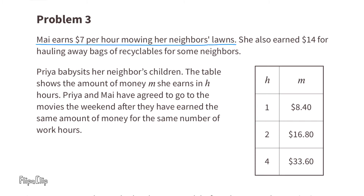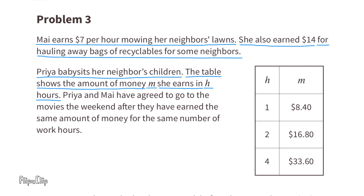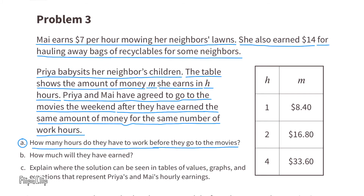Problem number 3. Mai earns $7 per hour mowing her neighbor's lawns and also earned $14 for hauling away bags of recyclables. Priya babysits her neighbor's children, and the table shows the amount of money M she earns in H hours. Priya and Mai have agreed to go to the movies after they have earned the same amount of money for the same number of work hours. Part A: how many hours do they have to work before they go to the movies?